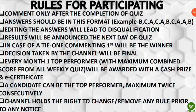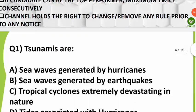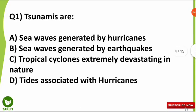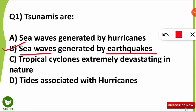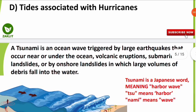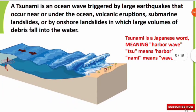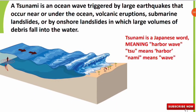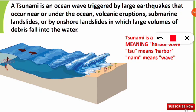Before revealing the results, let's discuss the questions first. The first question was: tsunamis are what? The correct option is option B — tsunamis are sea waves which are generated mostly by the action of earthquakes. We'll know more about tsunamis as questions about them appear most often in environmental science entrance examinations. The meaning of the word tsunami is a Japanese word meaning 'harbor wave'.